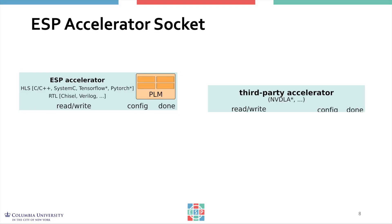The picture here shows a third-party accelerator on the right, which could be the NVIDIA DLA, and a newly designed accelerator on the left. Newly designed accelerators can be automatically synthesized from several different specifications: C, C++, or SystemC through high-level synthesis, or TensorFlow and PyTorch through the HLS4ML flow plus high-level synthesis.